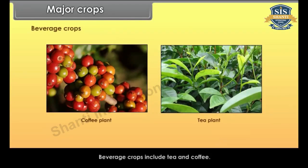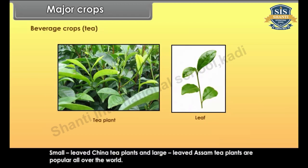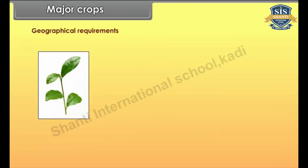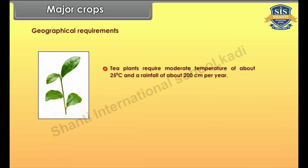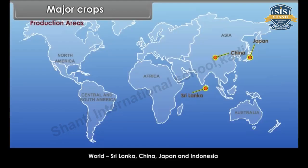Beverage crops include tea and coffee. Tea is made from the young leaves of the tea plant and has many varieties. Small-leaved China tea plants and large-leaved Assam tea plants are popular all over the world. Tea plants require moderate temperature of about 25 degrees Celsius and a rainfall of about 200 cm per year. Well-drained hilly slopes grow most of the tea. Production areas in India include Assam, West Bengal, Kerala and Tamil Nadu. World producers include Sri Lanka, China, Japan and Indonesia.